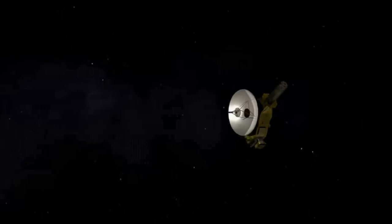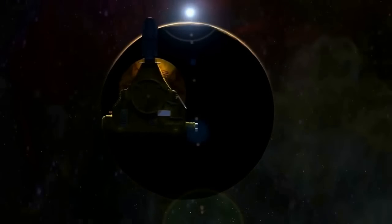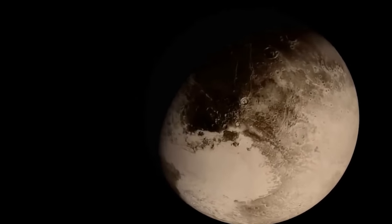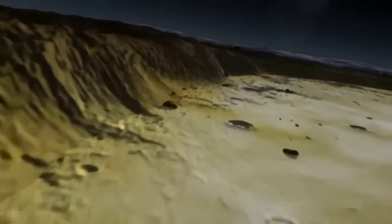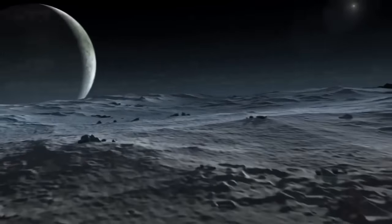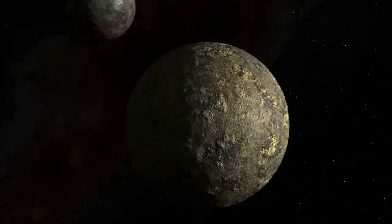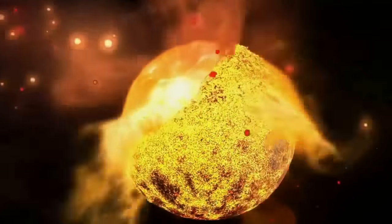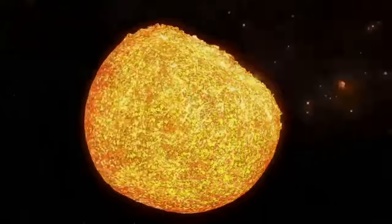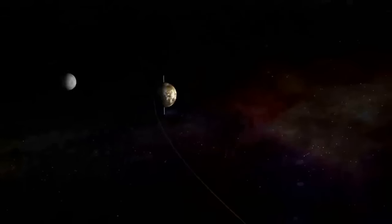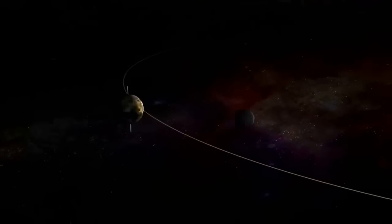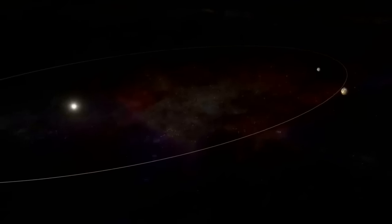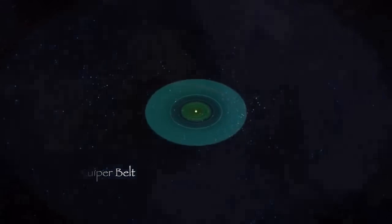The New Horizons probe finds evidence for roving planets within our solar system. While charting ancient craters on Pluto and on the surfaces of its moons, the science team discovered many craters are the same age. This suggests that they were formed by a single event. Even way out here, tiny Pluto was smashed by a wandering planet. The Pluto catastrophe may be related to other planetary migrations in the outer solar system.